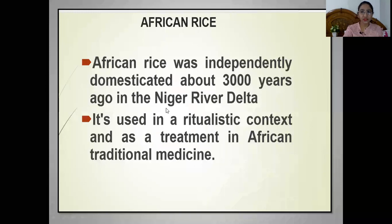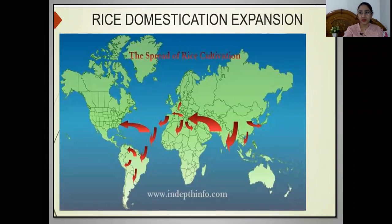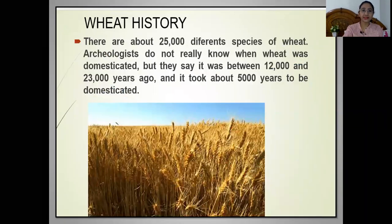African rice was used mainly for ritualistic purposes — for festivals — and by devotees as a treatment in African traditional medicine. It was used for the treatment of various diseases for medicinal purposes. This map shows the spread of rice cultivation from where it started, spreading to almost all countries.